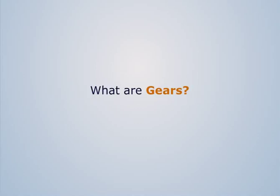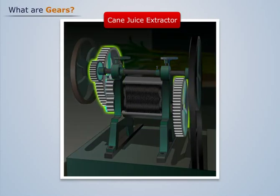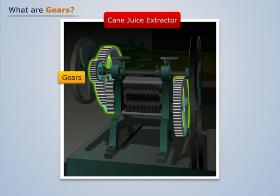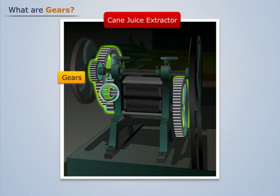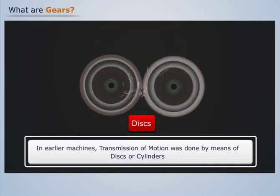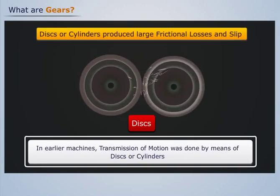What are gears? You must have seen a cane juice extractor — in it, the wheels which rotate the rollers are called a gear. We can see that this gear has uniformly placed large grooves known as teeth. In earlier machines, transmission of motion was done by means of discs or cylinders.